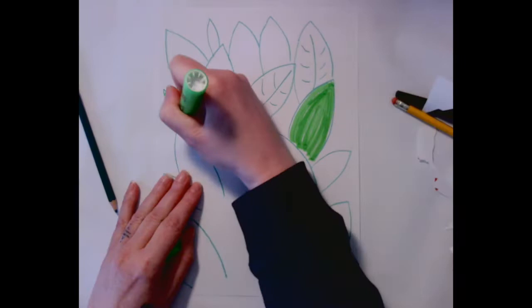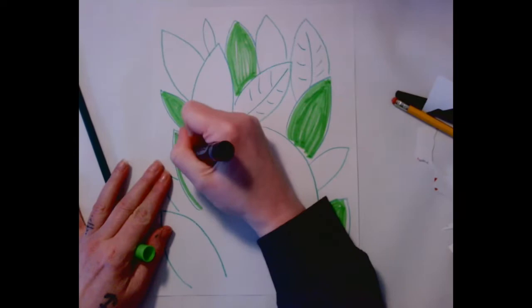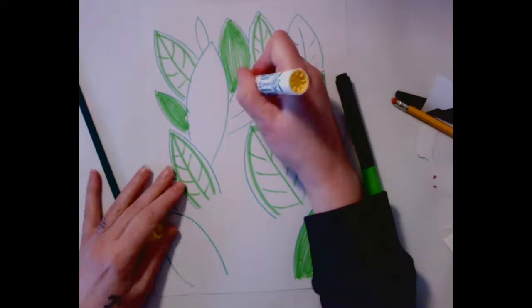I noticed that she used green and yellow in her leaves, so that's what I'm going to use. I'm going to use some green and different types of green. Use different markers. You can use colored pencils or crayons or whatever you have. And then I'm going to go in with some yellow and add some yellow.